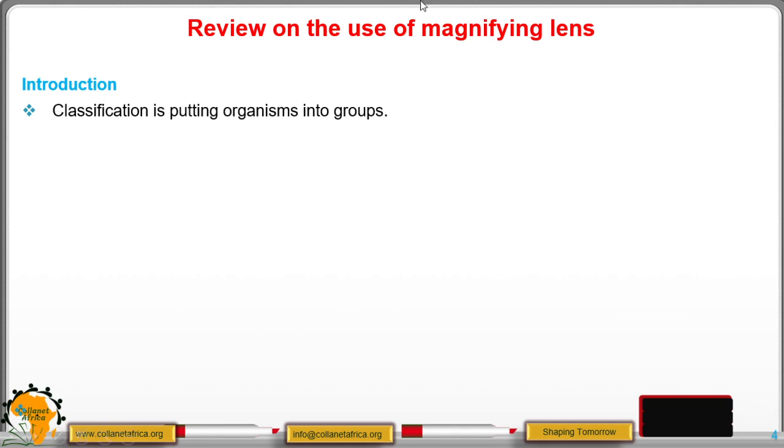This grouping or sorting is based on the study of external characteristics of a living organism. For example, we have a human being and a chicken. The two are animals, but you will find that a human being will belong to the class mammalia.